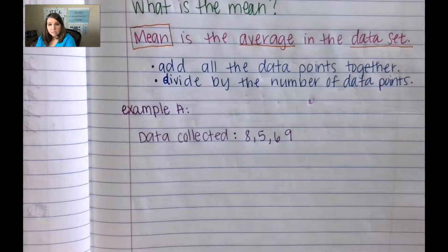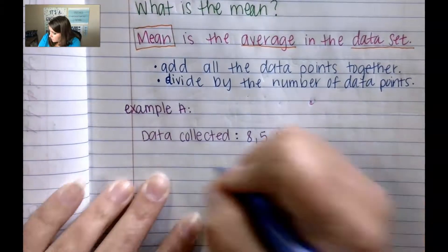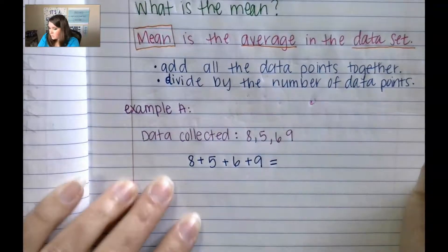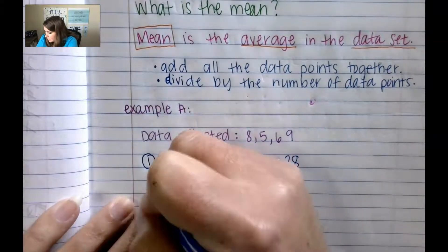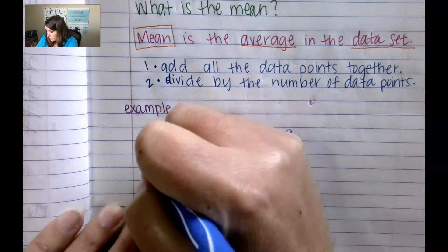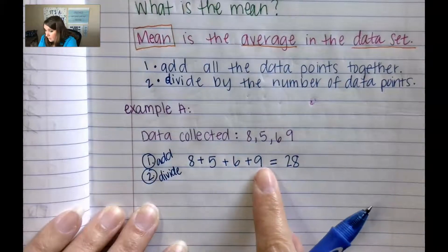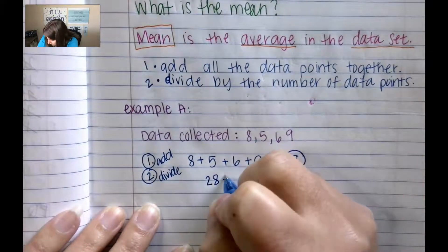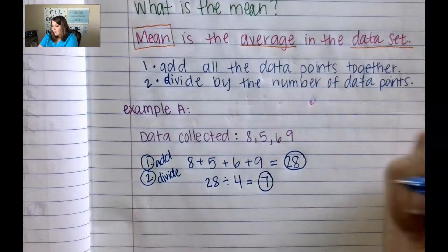So our job first is going to be to add all the data together. Step one, I am going to add 8 plus 5 plus 6 plus 9, and that's going to give me a total of 28. Step two says that we need to divide. We're going to divide by 4 because there are four data points. So we're going to take this 28, divide it by 4, and that is going to give us a mean or an average of 7.